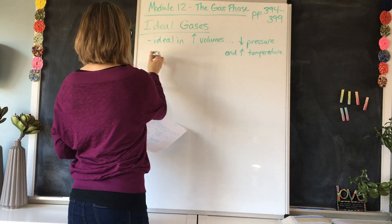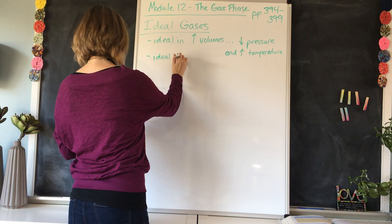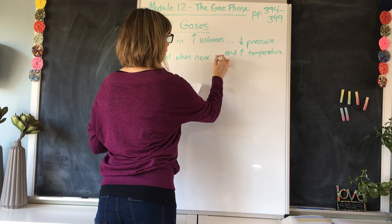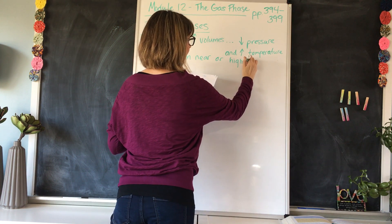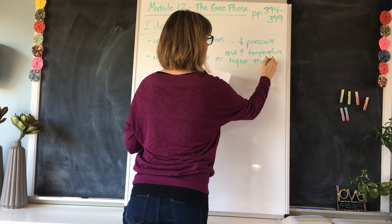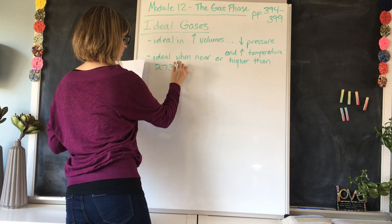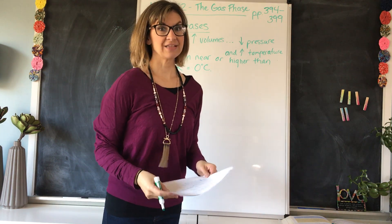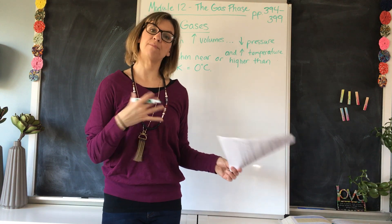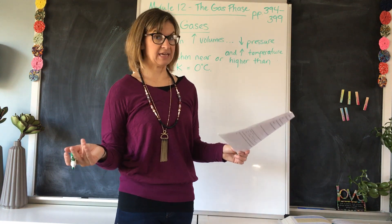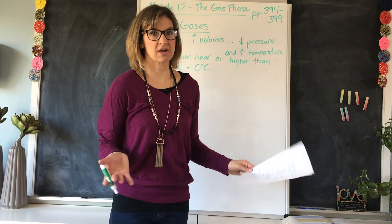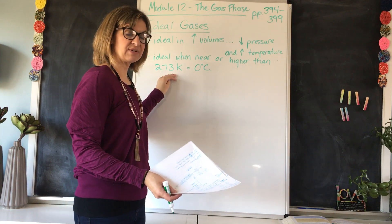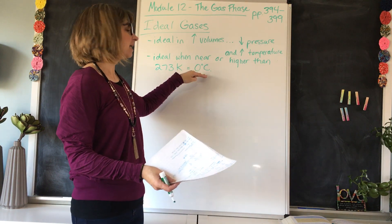They are ideal when near or higher than 273 Kelvin, which is equal to zero degrees Celsius. To give us some sort of number to compare to — when we say it needs to be a high temperature for it to be ideal, how high are we talking? The high temperature must be near or higher than 273 Kelvin, or zero degrees Celsius.